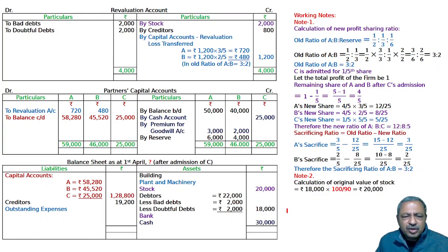Then the building, as it is from the question. Plant and machinery, as it is from the question. Then bank, as it is from the question. And outstanding expenses, and both sides total. Is it tallying? Yes, this is tallying. And this is your final answer.